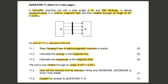The question we'll be doing is from the November 2018 Grade 11 Physical Sciences Paper 1 examination. It goes like this: a square induction coil with a side length of 3 centimeters and 400 windings is placed perpendicularly in a uniform magnetic field and then rotated at an angle of 45 degrees in 0.08 seconds.